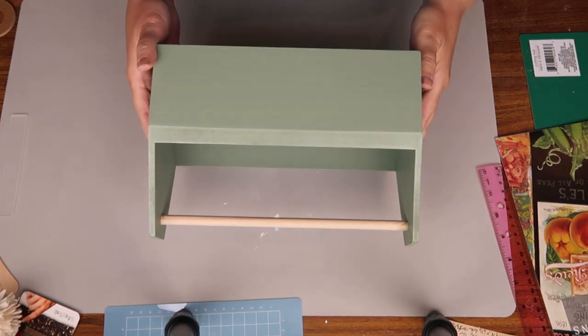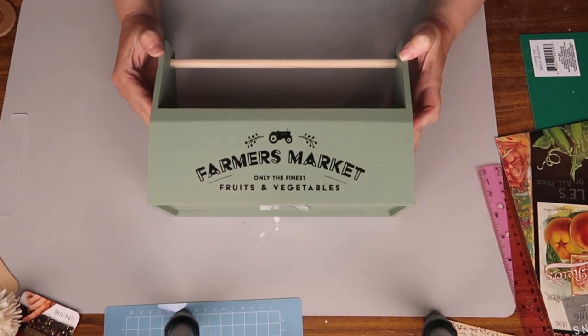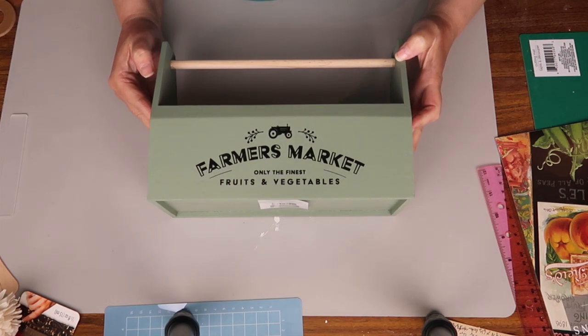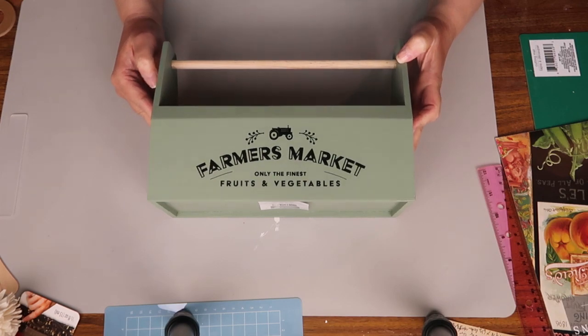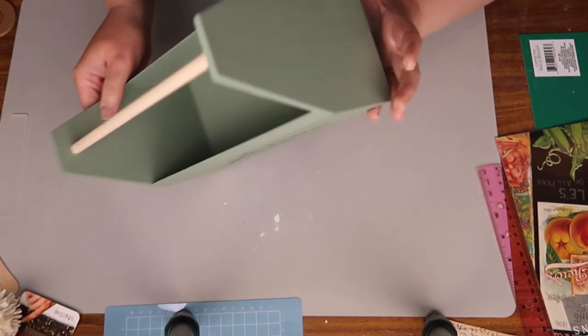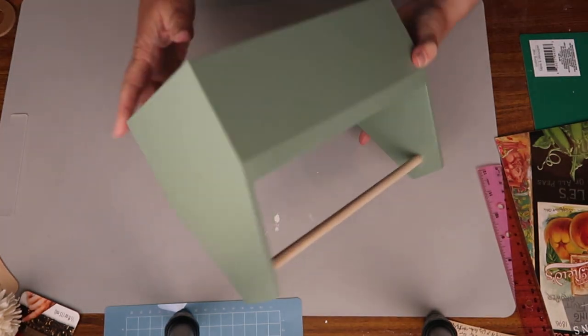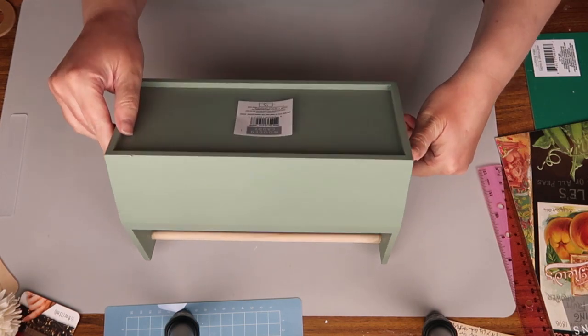Next I found this wooden caddy this morning and this is from the Target Dollar Spot. So farmers market only the finest fruits and vegetables I thought. That is just perfect for these transfers. I think we are going to do on the side here. This wooden caddy was $5.